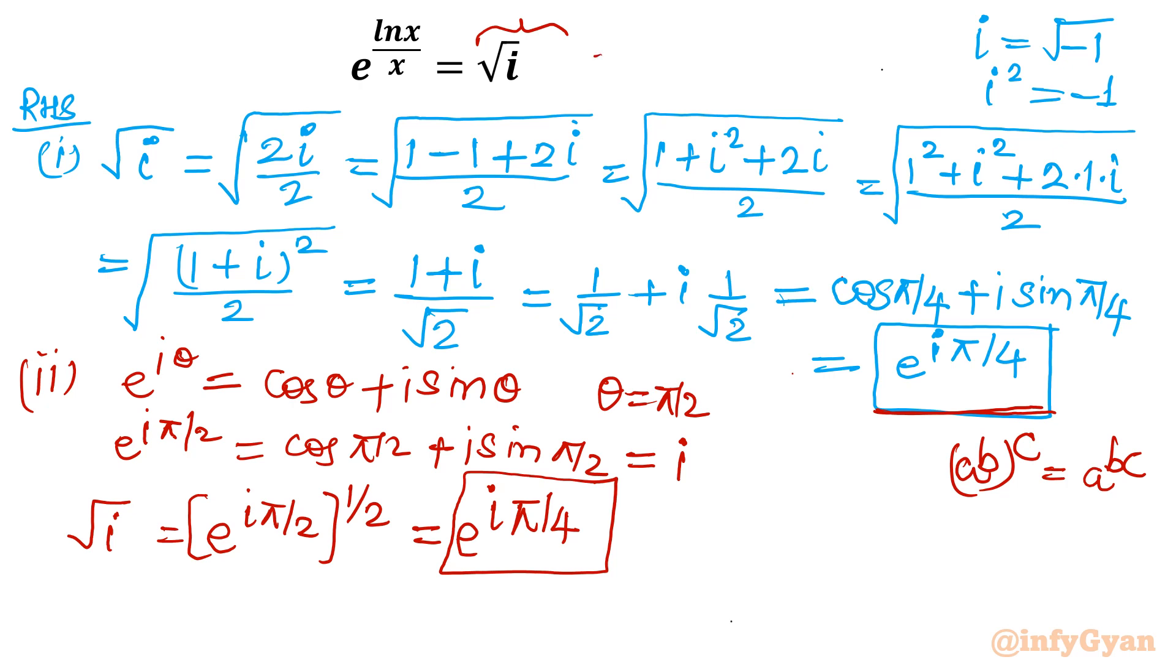That means our equation is e raised to the power i pi by 4. Once I will write this I can equate our power it should match. So I will write ln x over x equal to, let me write here ln x over x is equal to i pi by 4. Now we will solve this equation.